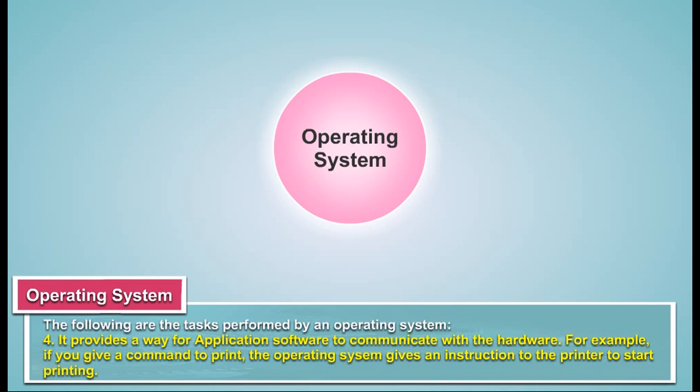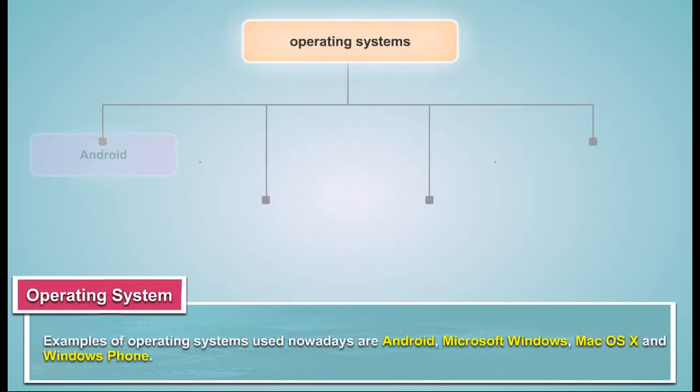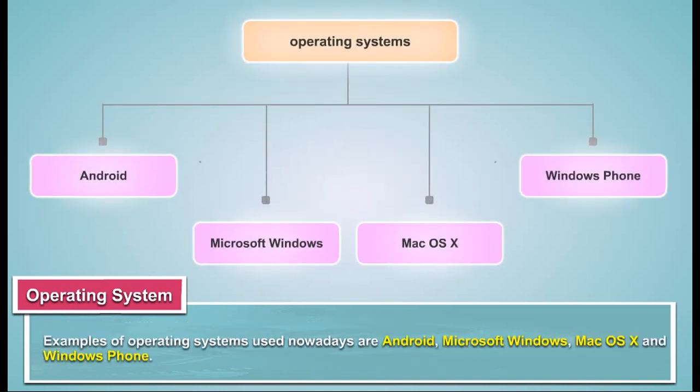For example, if you give a command to print, the operating system gives an instruction to the printer to start printing. Examples of operating systems used nowadays are Android, Microsoft Windows, Mac OS X, and Windows Phone.